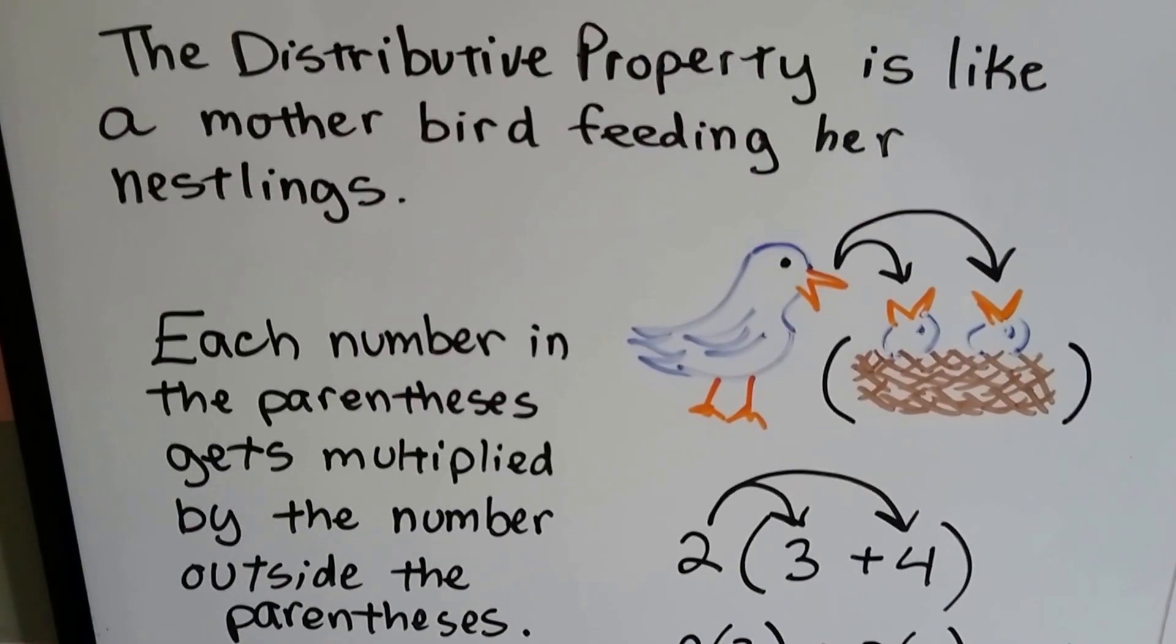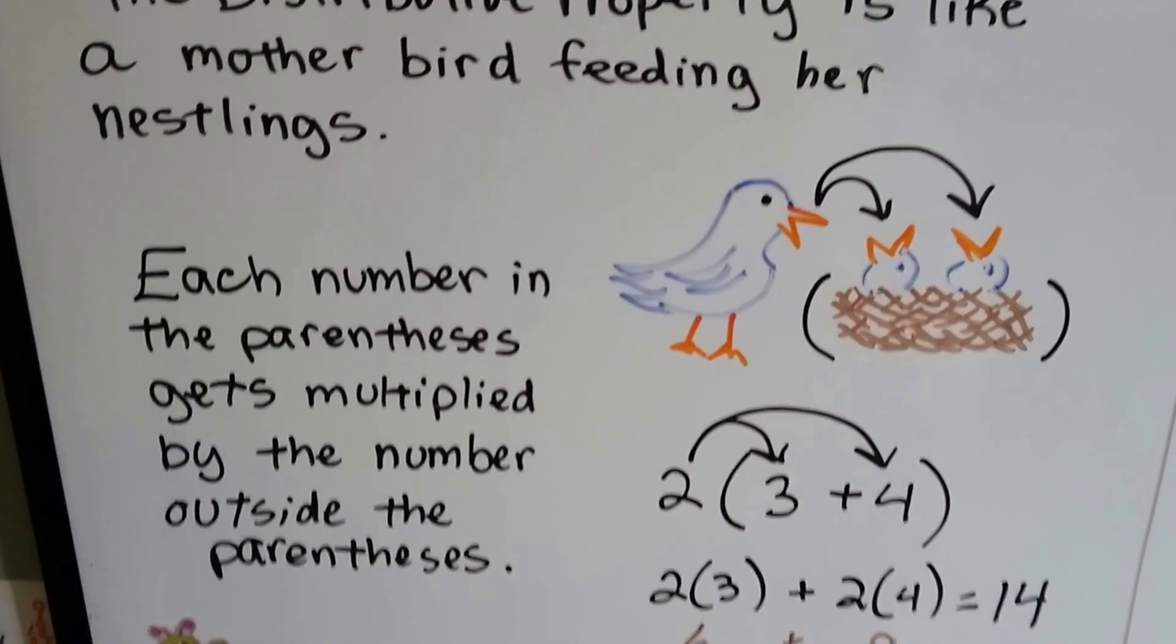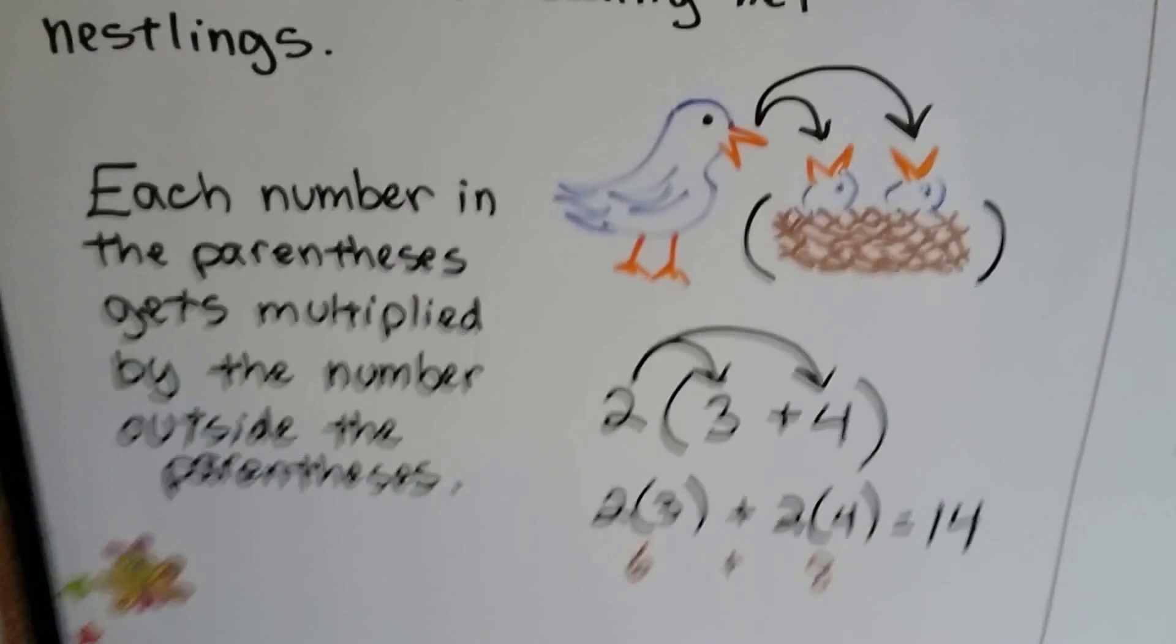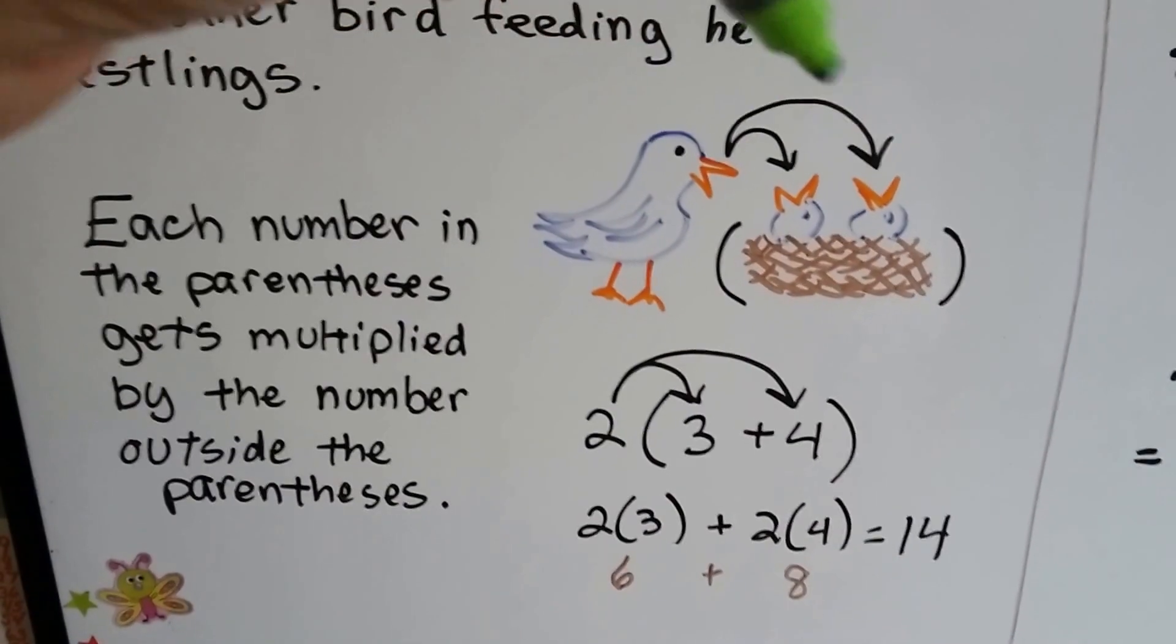The distributive property is like a mother bird feeding her nestlings. Each number in the parentheses gets multiplied by the number outside the parentheses. Each little bird gets a turn. No one skipped.